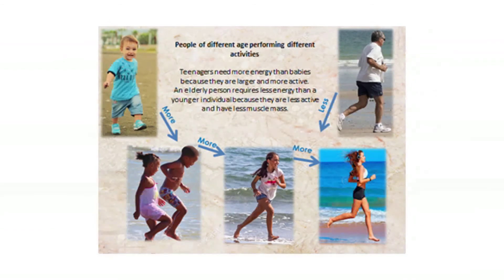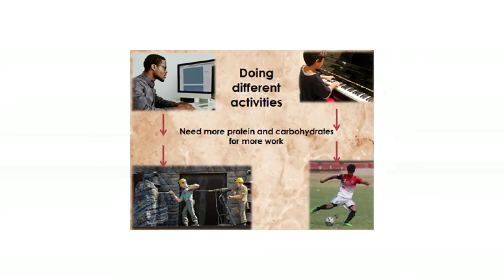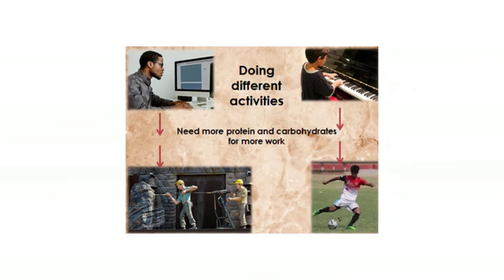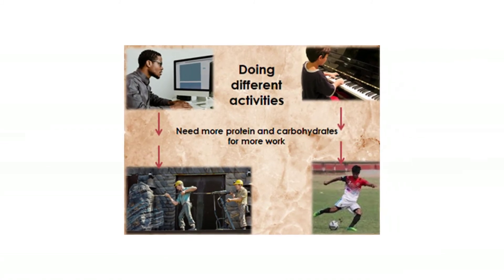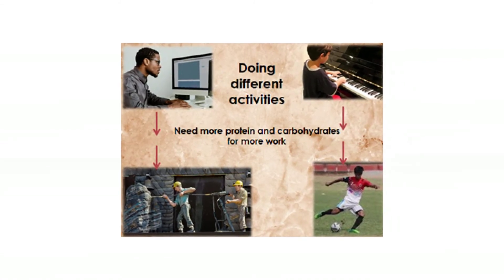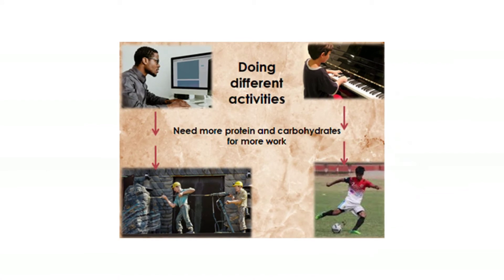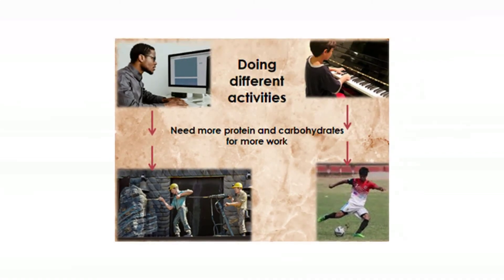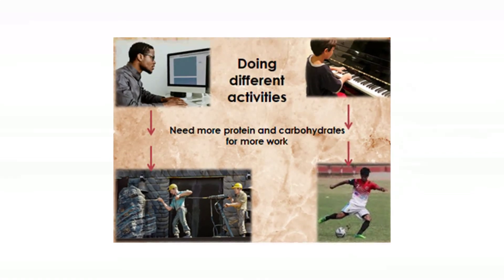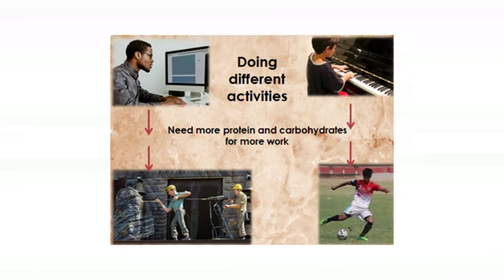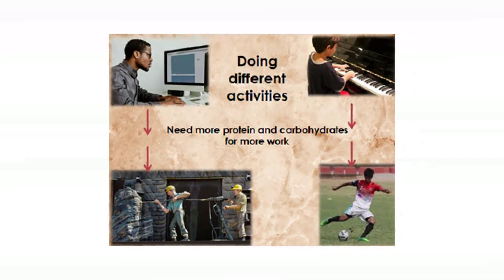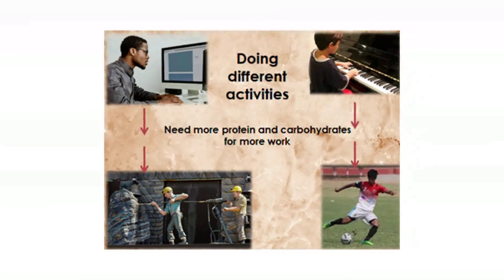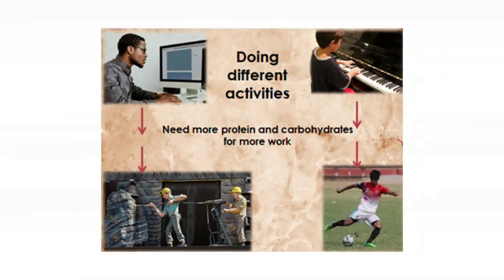What about people doing different activities? When you are doing sport, for example athletics at school, you need proteins for building muscles and plenty of carbohydrates for energy. If you are playing soccer, for instance, you need more proteins and carbohydrates than someone who is playing snooker.